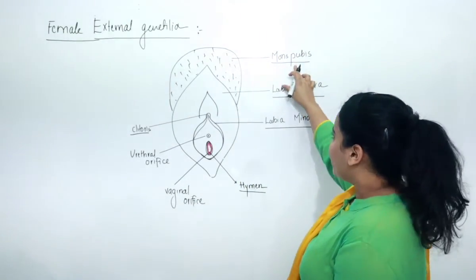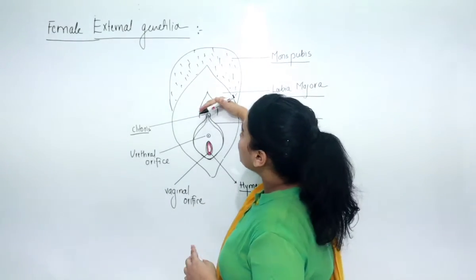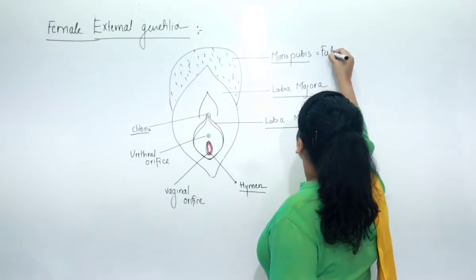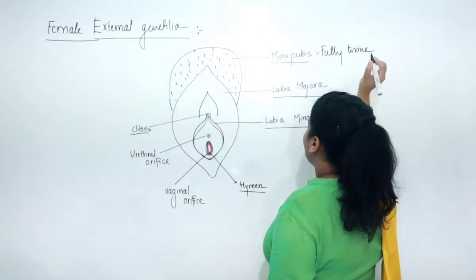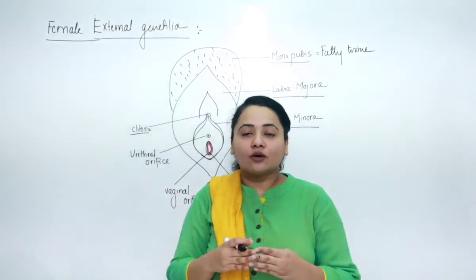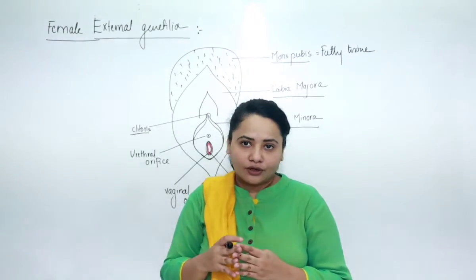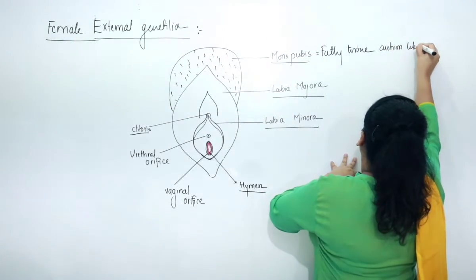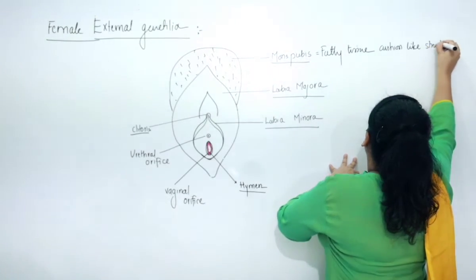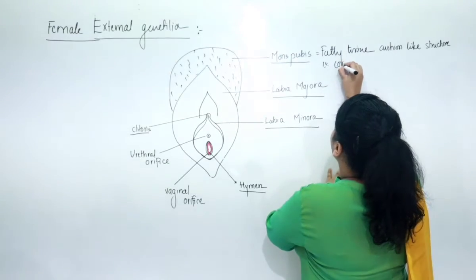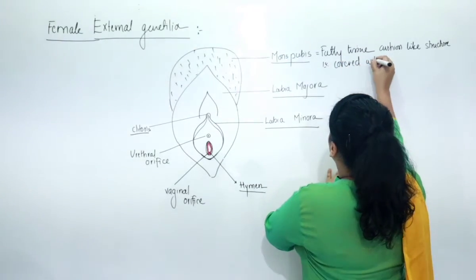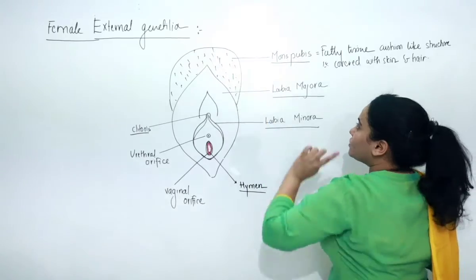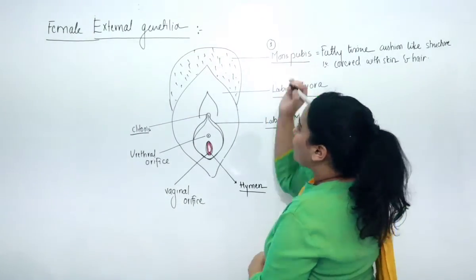Now let us talk about the first one, known as mons pubis. Mons pubis is located on the anterior portion and it is made up of fatty tissue. It is covered with hairs and skin. So it is a fatty tissue cushion-like structure covered with skin as well as hairs.